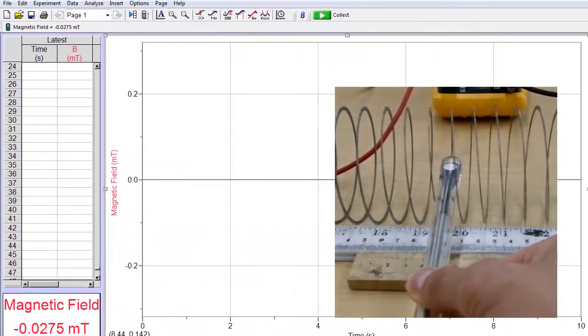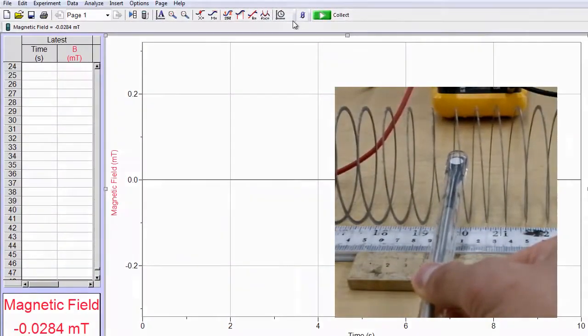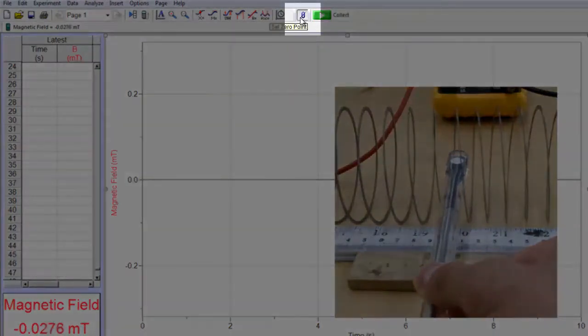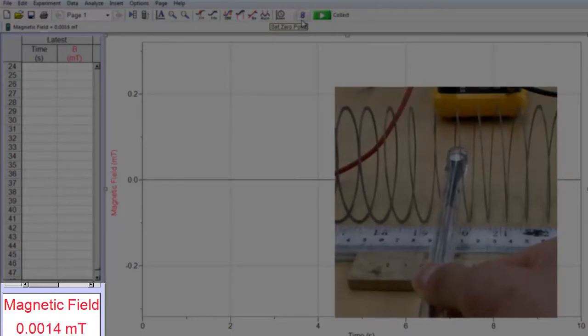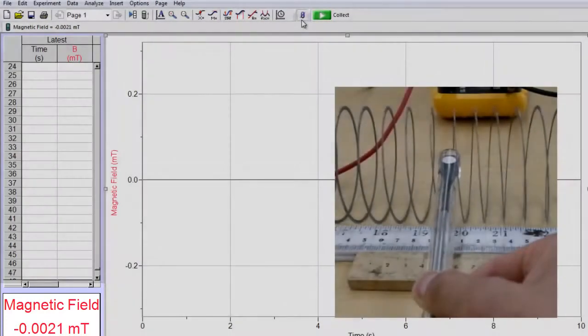The first thing you want, when you go to Logo Pro, is to zero the magnetic probe. So you know this is not reading zero right now. Once we hit zero, it gets much closer to zero. We'll read exactly at zero.